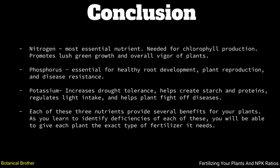Just to sum things up: nitrogen is the most essential nutrient — it's needed for chlorophyll production and it promotes lush green growth and overall vigor of your plants. Phosphorus is essential for healthy root development, plant reproduction, and disease resistance. Potassium increases drought tolerance, helps create starch and proteins, regulates light intake, and helps your plant fight off diseases. Each of these three nutrients provides several benefits for your plants, and as you learn to identify deficiencies of each, you will be able to give each plant exactly the type of fertilizer it needs.